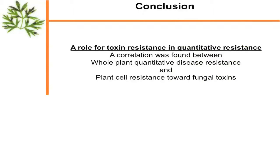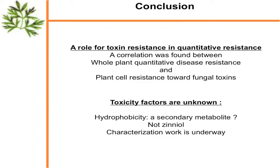As a conclusion, there is a role for toxin resistance in quantitative resistance. We have found a correlation between whole plant quantitative disease resistance and plant cell resistance toward fungal toxins — something never seen elsewhere before. The actual toxicity factors are completely unknown for the moment. We know there are hydrophobic compounds, probably a secondary metabolite, but we are not sure. What we are sure of is that it is not zinniol, and we are now underway trying to characterize these toxins.